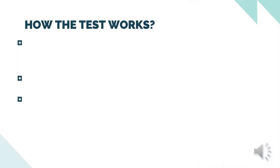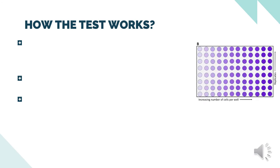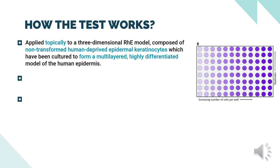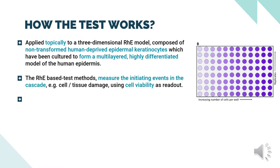How does the test work? First, apply topically to a 3-dimensional RHE model composed of non-transformed human-derived epidermal keratinocytes, which have been cultured to form a multi-layered, highly differentiated model of the human epidermis. Next, the RHE-based test methods measure the initiating events in the cascade — for example, cell or tissue damage — using cell viability as readout.